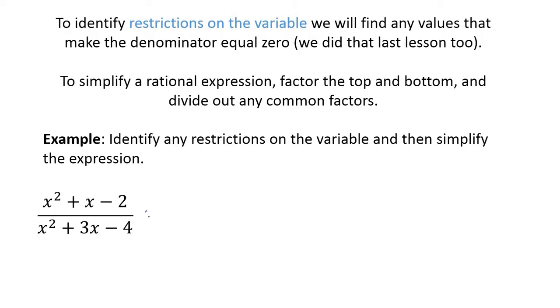So to do that, let's go ahead and factor first. So on the top, we want factors of negative 2 add to make 1. And so remember, we have x and x. Now for 2, I've only got 2 and 1. Those are my only options. Now they need to add to make positive. So I'm going to have x plus 2, x minus 1. So there's my top.